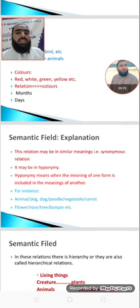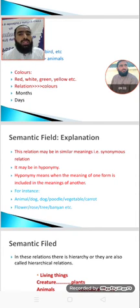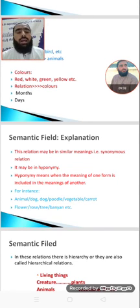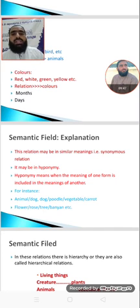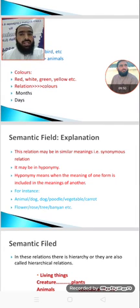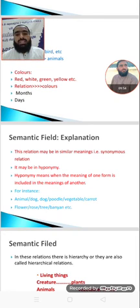There is a relation in months as well. From January to December — January, February, March, April, May, June, July — these all have a relation because they are all names of months. Similarly, days: Monday, Tuesday, Wednesday, Thursday, Friday, Saturday, Sunday — this is again a series of days forming a Semantic Field.